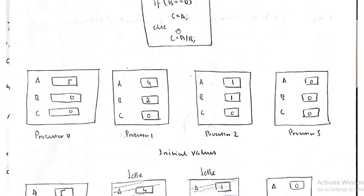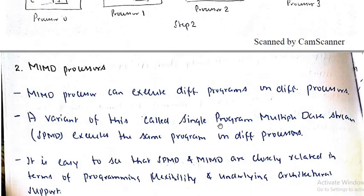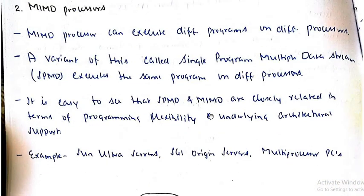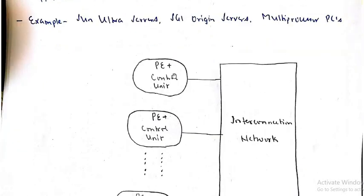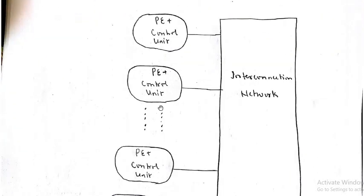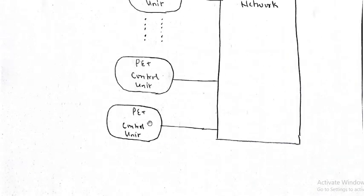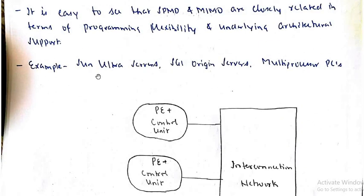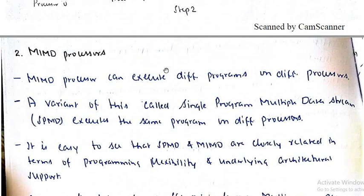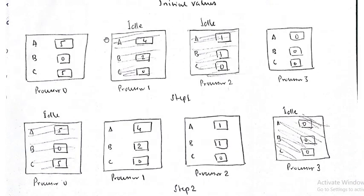Now talking about MIMD — multiple instruction streams and multiple processors. In MIMD, multiple processors each execute their own instructions independently. Examples include Sun Ultra Servers, SGI Origin Servers, and Multiprocessor PCs. So that was SIMD and MIMD.